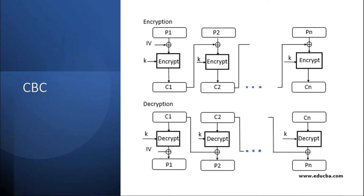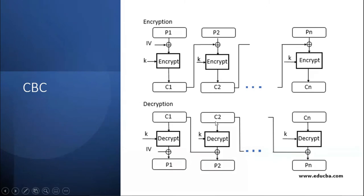The decryption process is in the reverse direction. Take C1 as input, decrypt first with key K, and since XOR is an invertible operation, use the same initial vector IV to get plaintext block P1. For C2, the same decryption process applies using key K, and for the XOR operation it takes C1 from the first cipher block, and you get plaintext block P2. This continues until you decrypt ciphertext block N.